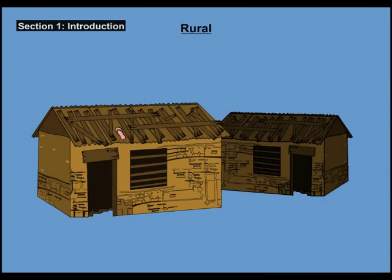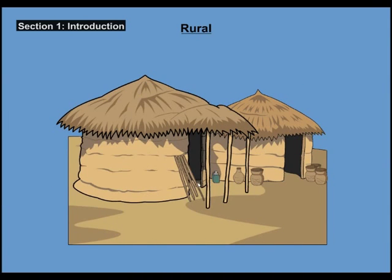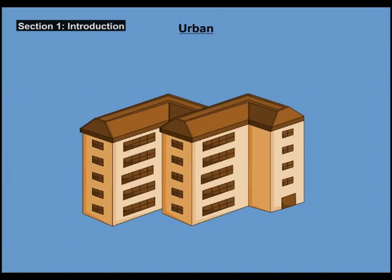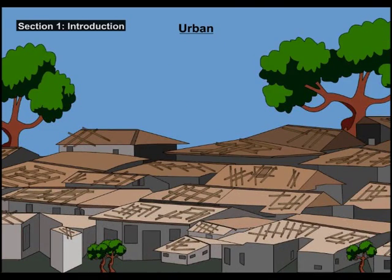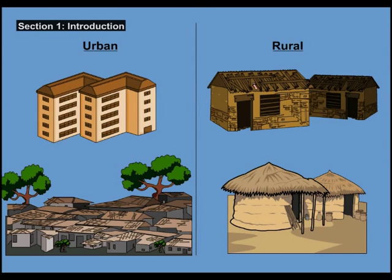Houses in rural and urban areas will differ in size and shape and be constructed with different materials such as mud, wooden planks, and brick. But in each case, a spray is applied to the surface of the inside walls.